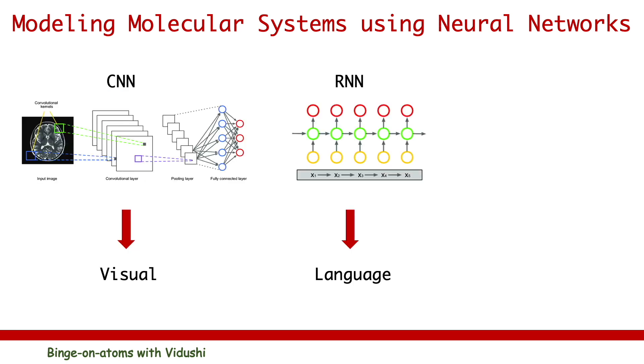Like convolutional neural networks work great with identifying visual objects, recurrent neural networks succeed in natural language processing. Similarly, neural network architectures need to be designed for molecular models.